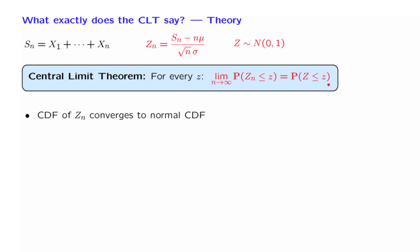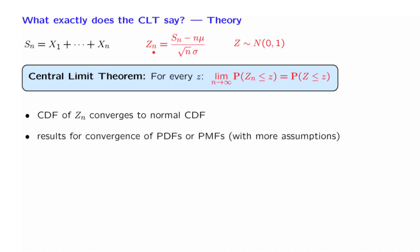So what we have is a statement about CDFs. It does not yet tell us anything specific about PDFs or PMFs. For example, if Sn and the X's are all continuous random variables, so Zn is also continuous, you might wonder whether the PDF of Zn converges to a normal PDF. There are results of this kind, but they generally need a few more mathematical assumptions. Nevertheless, when we show pictures of various examples, we will do this by showing pictures of PDFs and PMFs, because these are easier to visualize.